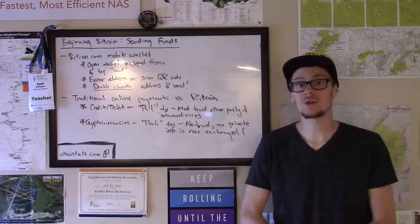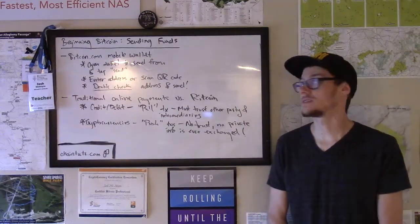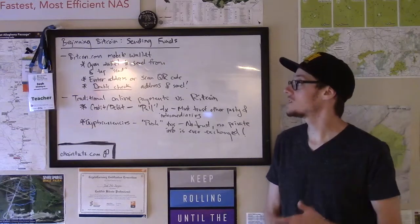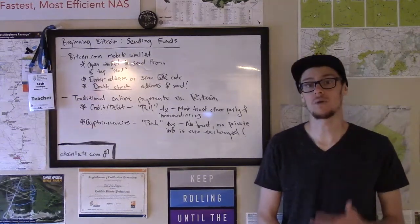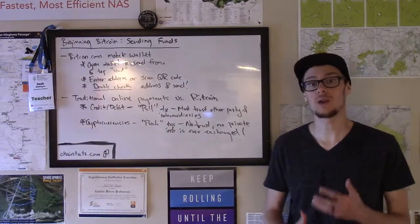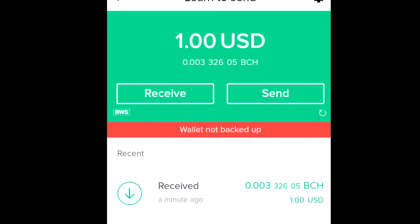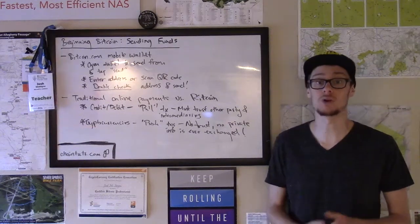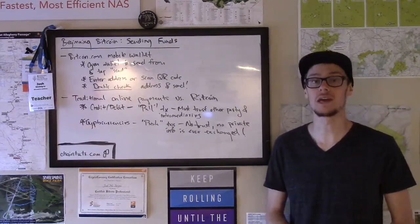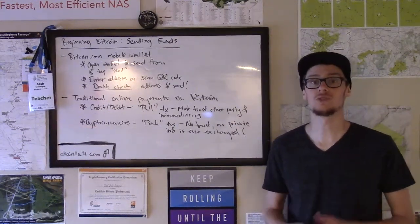When we want to get started sending funds to somebody else, we just need to open up our wallet that we've already set up and loaded up with some funds. If you want to send money to someone else, you do need to have sent some money into your mobile wallet using maybe an exchange, or by asking somebody already involved in cryptocurrency to send you some.